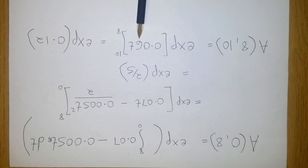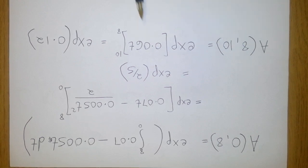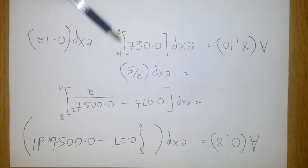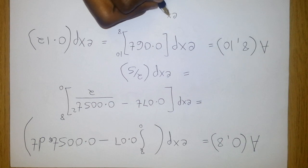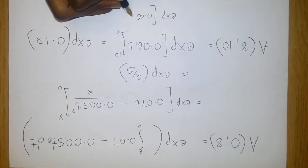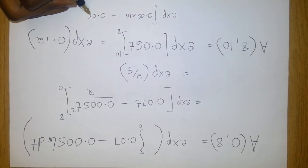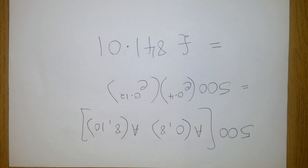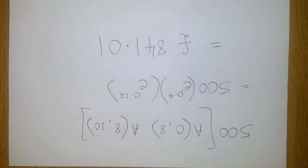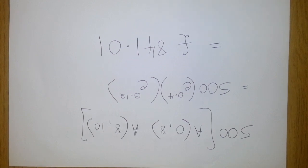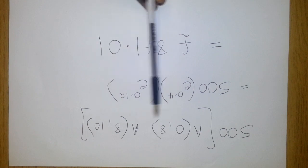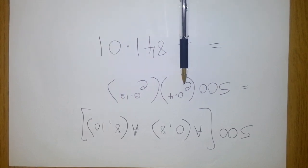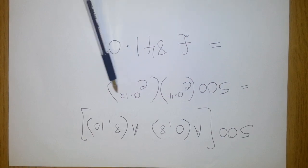The accumulation factor from time 8 to 10 is the exponential of the integral of 0.06 from 8 to 10, which gives the exponential of 0.06t evaluated between 10 and 8. That gives 0.12, because 0.06 times 10 minus 0.06 times 8 equals 0.12. So the accumulated value of £500 over 10 years is 500 times exponential of 0.4 times exponential of 0.12.